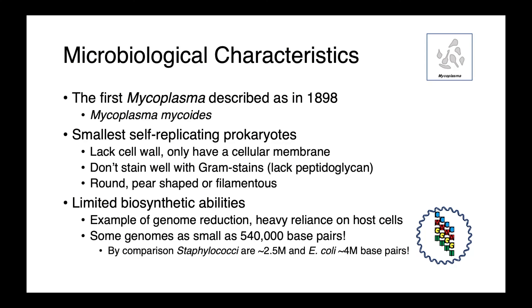As some of our smallest self-replicating prokaryotes, these organisms are anatomically a little bit weird. They lack a peptidoglycan-composed cell wall, and they therefore don't stain with the gram stain, and are intrinsically resistant to the beta-lactam-type antimicrobials. Although we have a wide variety of mycoplasma of importance to both human and veterinary medicine, the first species to be described was actually Mycoplasma mycoides, which causes a very important and potentially economically damaging disease in cattle. Because these organisms don't have a cell wall, they lack that structural rigidity, and the cells are oftentimes irregularly shaped. They can be round, pear-shaped, or even filamentous.